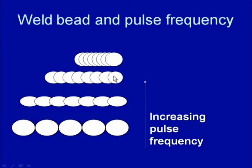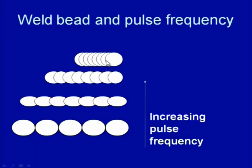Increasing the pulse frequency increases the heat input to the base material and the degree of overlap also increases. At low pulse frequencies, the effect of pulsed TIG welding is found more on the structure and mechanical properties compared to high pulse frequency. At high pulse frequency, pulsing takes place very frequently, and the result is almost like welding developed using conventional welding without pulsing — because in conventional welding the current is pulsed at 50 or 60 Hz, where the current magnitude varies in a sinusoidal manner.